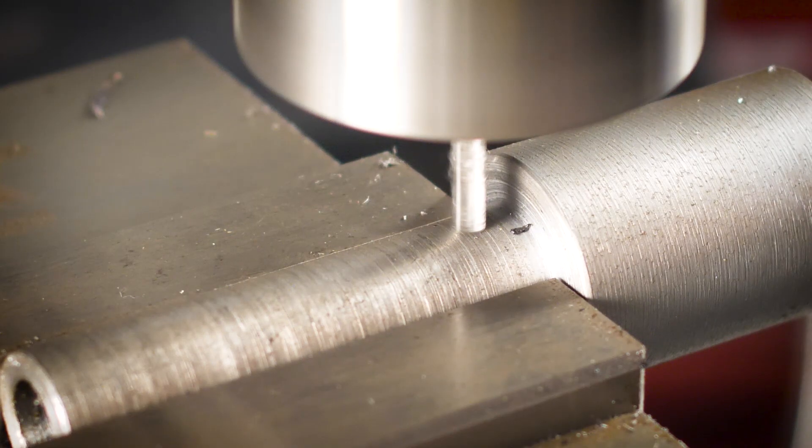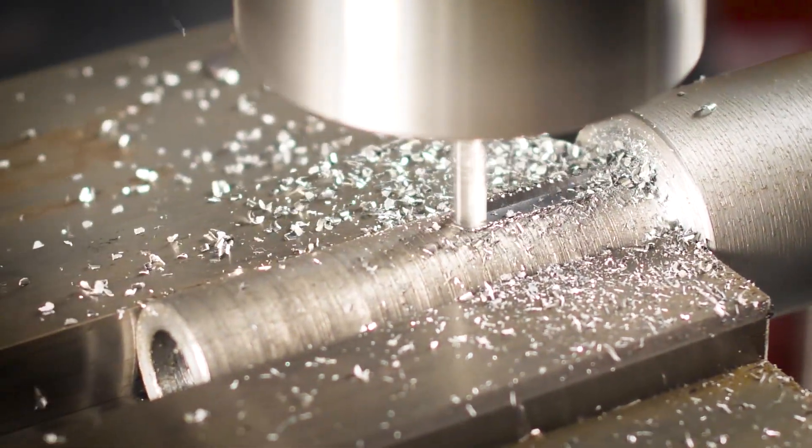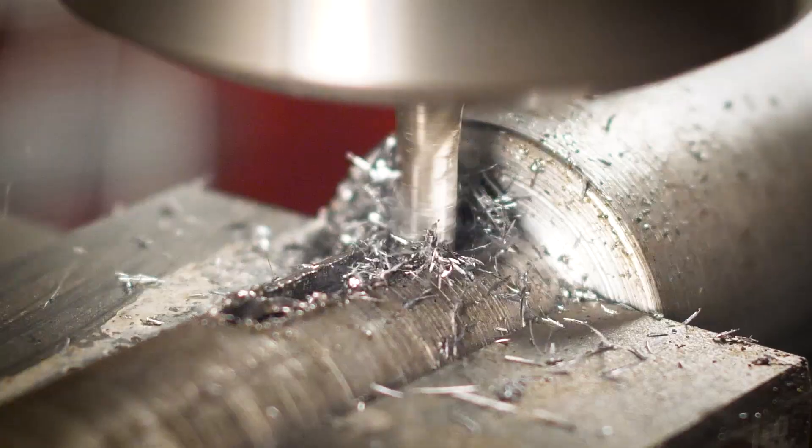Taking it over to the mill, I need two slots. The first is a through slot into the reamed bore. I started by milling up the center and then stepping sideways each way to finish it to the correct width.